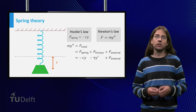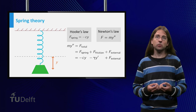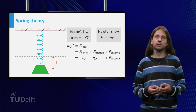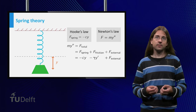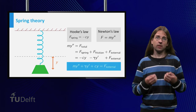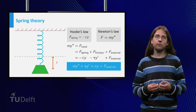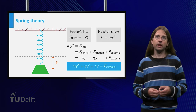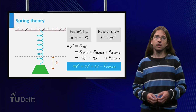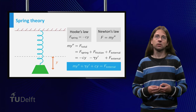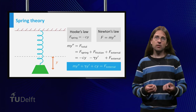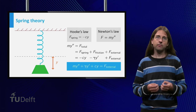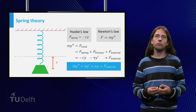We make the standard assumption that the external force does not depend on the location of the mass. This gives the equation m times the second derivative of y plus gamma times the derivative of y plus c times y equals the driving force. This equation is called a second order linear differential equation with constant coefficients.